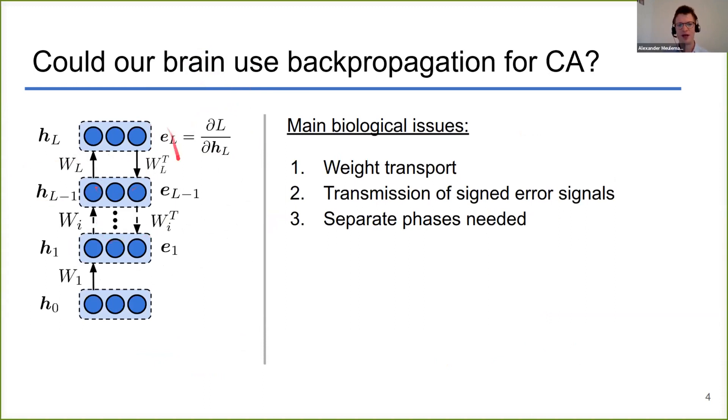The feedback path for propagating the errors backward to your network needs to have exactly the same synapses as the forward pathway. However, in biology these are likely two separate pathways, so they cannot share the synaptic weights. Then you also need to transmit signed errors backward to your network and you need a separate feedforward and feedback phase.